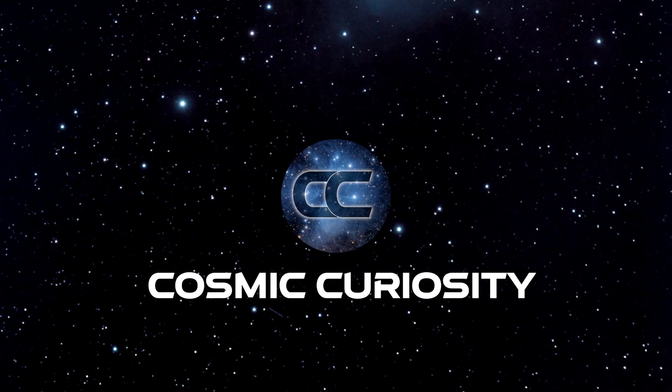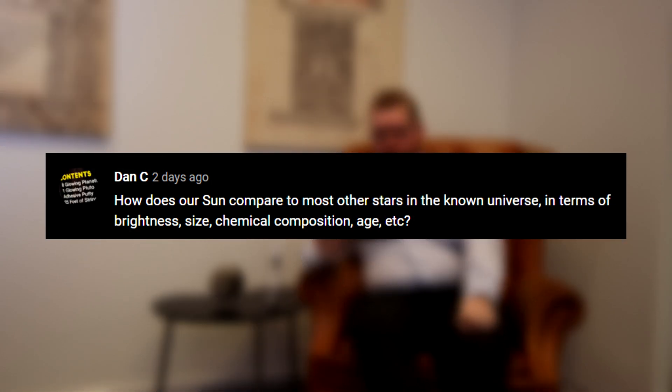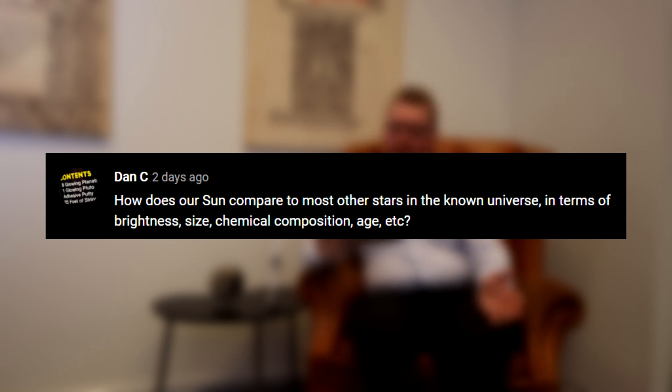Hello and welcome to Cosmology Corner, the show where I answer your questions about space and astronomy. We have a question from Dan Zee who asks: how does our sun compare to most other stars in the known universe in terms of brightness, size, chemical composition, age, etc.? I'm going to have to keep my tablet for this one because there's a lot of numbers here.